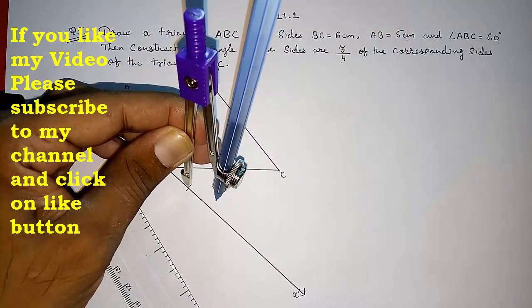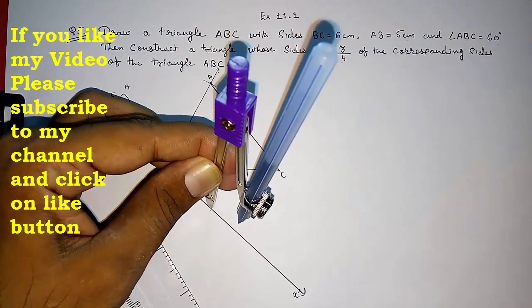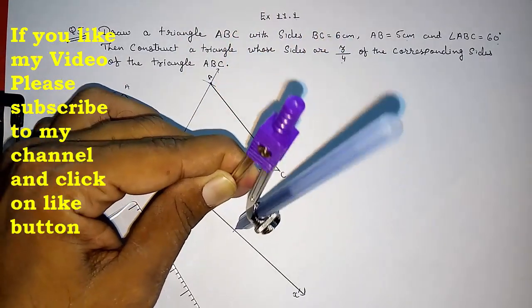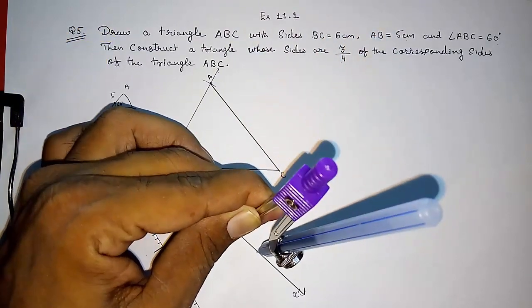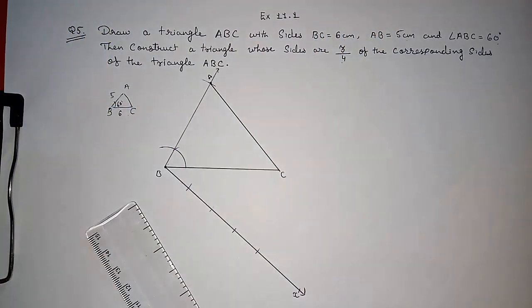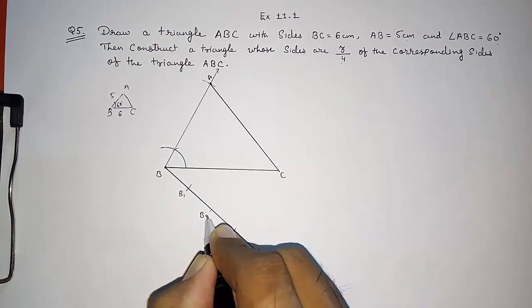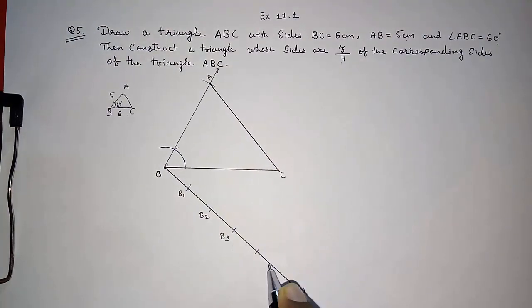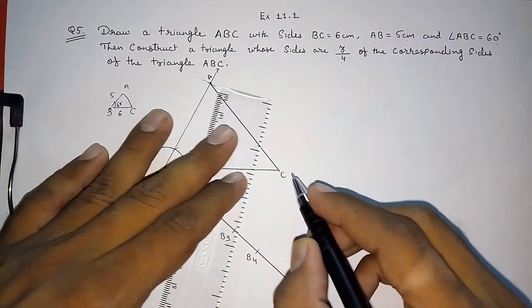Look here I am going to draw. B1, B2, B3, and this will be our B4. This is our last. Give the names. B1, B2, B3, and B4. Now join. This is our 4 parts. So we have to join with 4 parts.